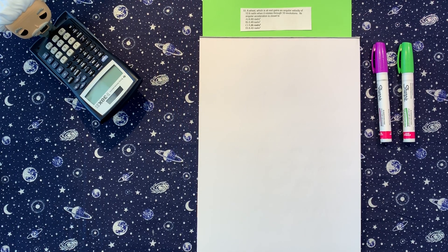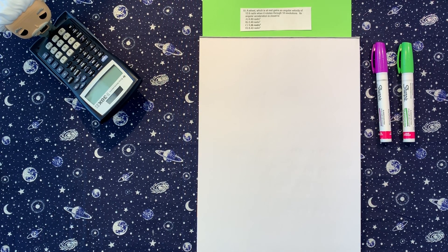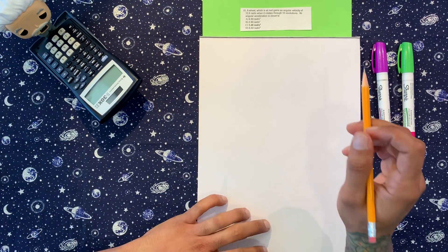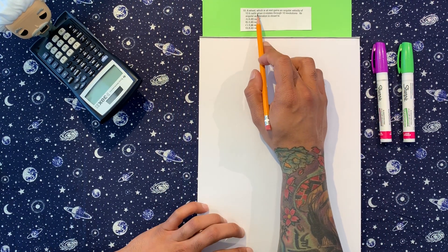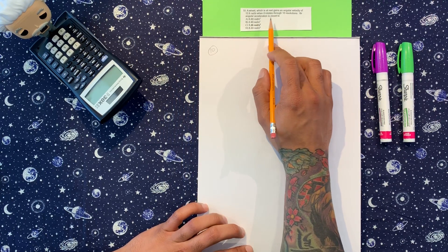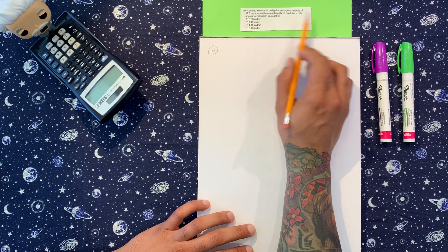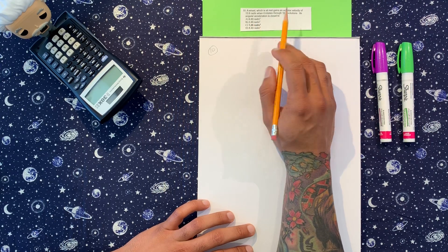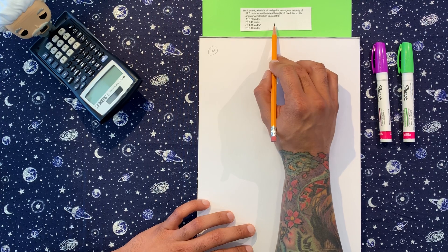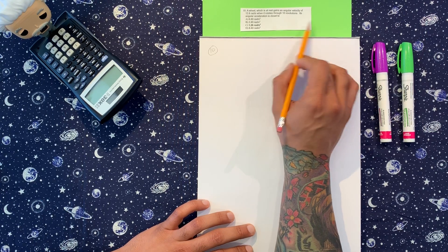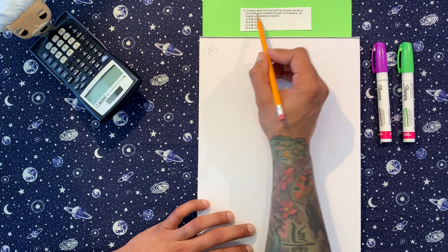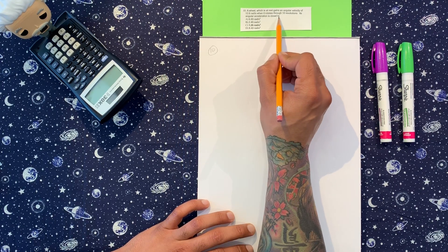All right, number 10 is chilling. We got a couple formulas but basically plug and chug. So a wheel which is at rest gains an angular velocity of 12.6 radians per second when it rotates through 10 revolutions. Its angular acceleration is closest to... you see there's the closest to thing, there's not an exact answer.